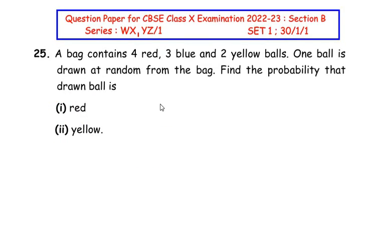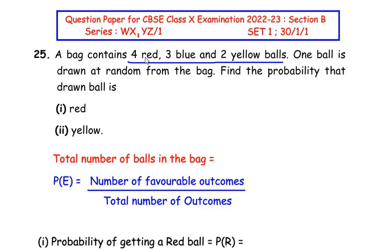Let us move on to the 25th question, which is from the probability chapter. A bag contains 4 red, 3 blue, and 2 yellow balls. One ball is drawn at random. Find the probability that the drawn ball is red and yellow. The total number of balls is 4 + 3 + 2 = 9. The formula for probability of an event is: number of favorable outcomes divided by total number of outcomes, which is 9.